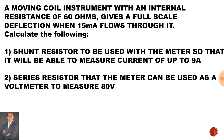Here is a typical exam type calculation. A moving coil instrument with an internal resistance of 60 ohms gives a full scale deflection when 15 milliamps flows through it. Calculate the following: In part one, what is the value of the shunt resistor to be used with the meter so that it will be able to measure current of up to 9 amps? In part two, what is the value of the series resistor so that the meter can be used as a voltmeter to measure up to 80 volts?